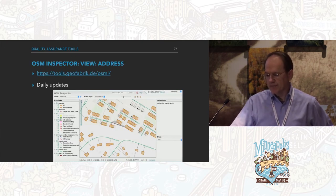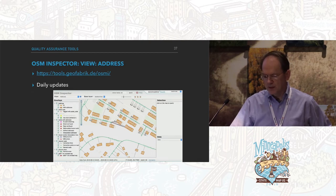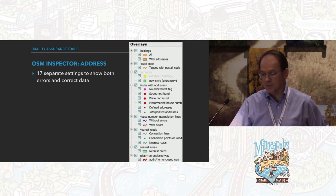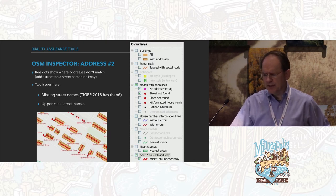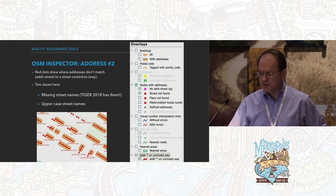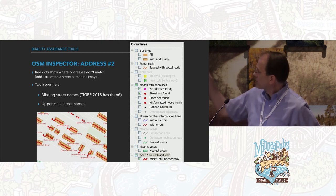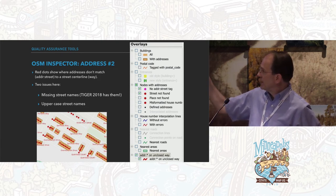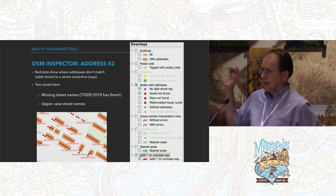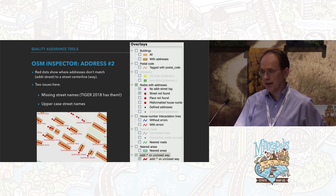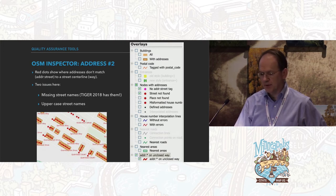OSM Inspector is another tool I very much like. It does daily updates and has 17 different settings to show errors and correct data. The first thing I'll show is the red dots, which in this case are street-not-found errors. We have two problems: the street centerlines don't have street names, and if they did have names, half of these things are uppercase while we're matching on mixed case. So Quayside Court should be mixed case.